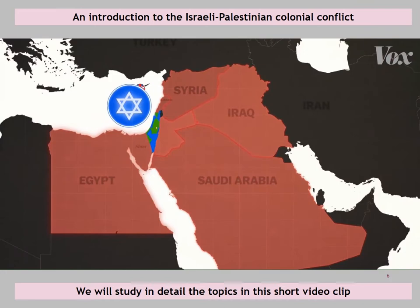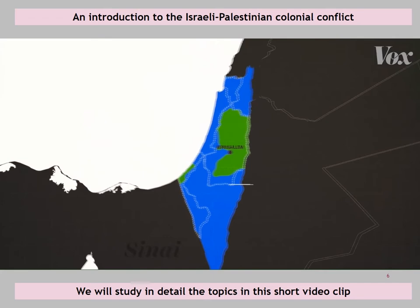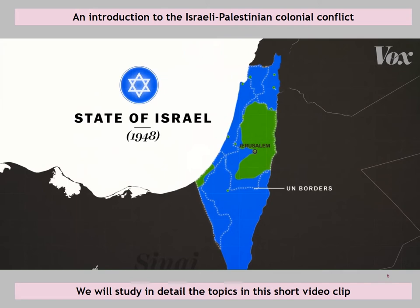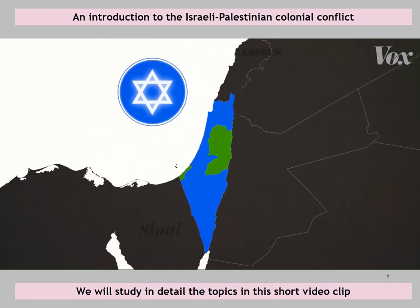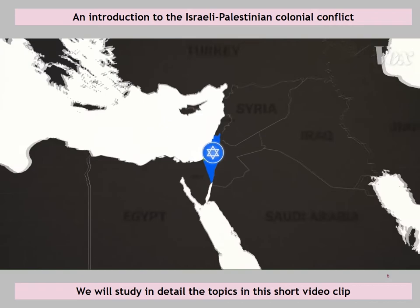Many of the Arab states, who had just recently won independence themselves, declared war on Israel in an effort to establish a unified Arab Palestine. The new state of Israel won the war, but in the process they pushed well past their borders under the UN plan, taking the western half of Jerusalem and much of the land that was to have been part of Palestine. They also expelled huge numbers of Palestinians from their homes, creating a massive refugee population whose descendants today number about 7 million. At the end of the war, Israel controlled all of the territory except for Gaza, which Egypt controlled, and the West Bank, which Jordan controlled. This was the beginning of the decades-long Arab-Israeli conflict.